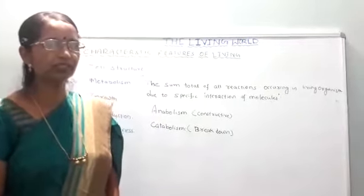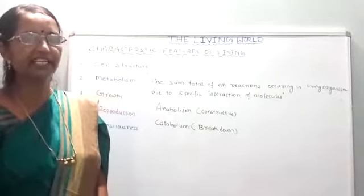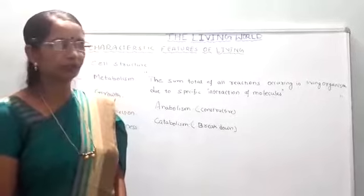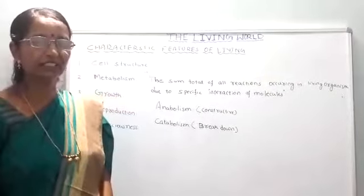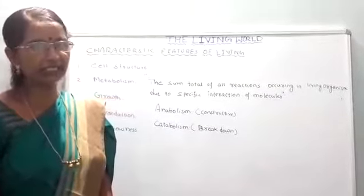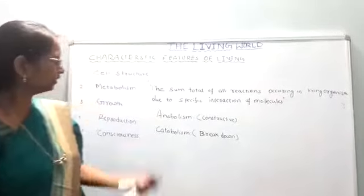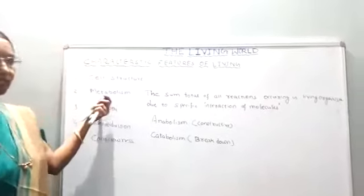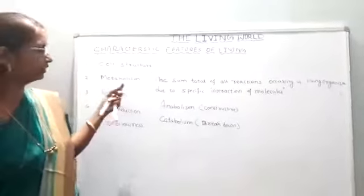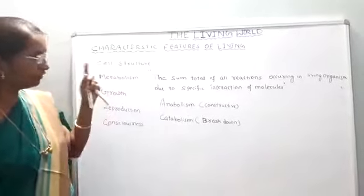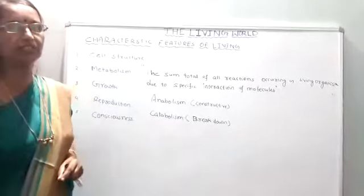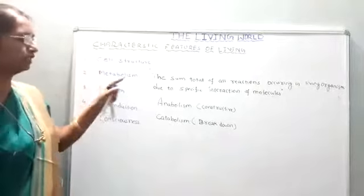Let us move towards the next characteristic feature of a living organism. The first character is that every living organism has a definite cell structure. The second characteristic feature of a living organism is that every living organism, either unicellular or multicellular, must possess metabolism.